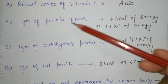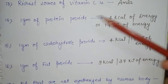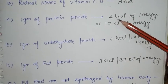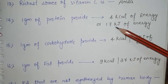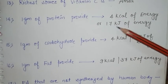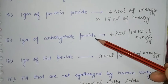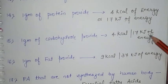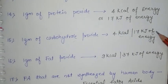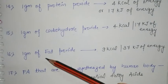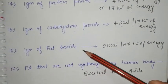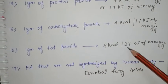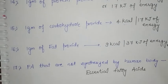1 gram of protein provides 4 kilocalories or 17 kilojoules of energy. 1 gram of carbohydrate provides 4 kilocalories or 17 kilojoules of energy. 1 gram of fat provides 9 kilocalories or 37 kilojoules of energy.